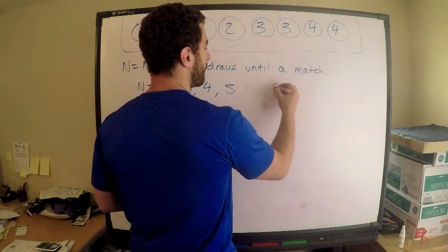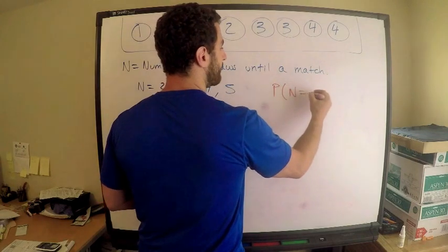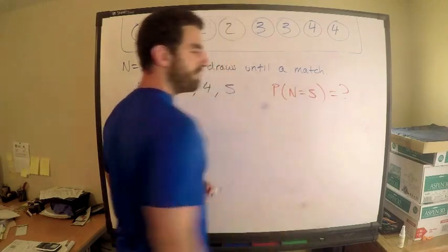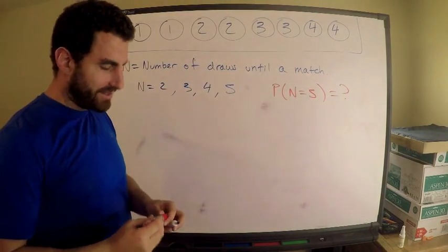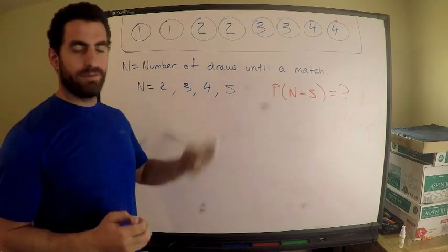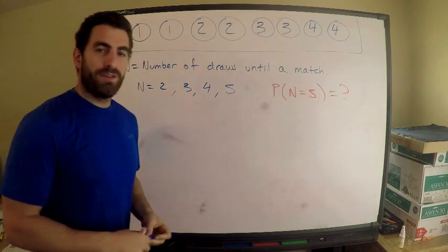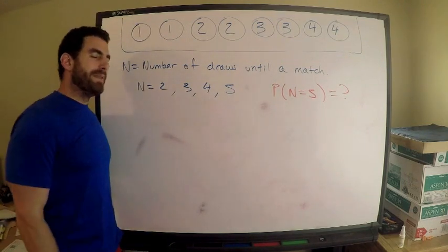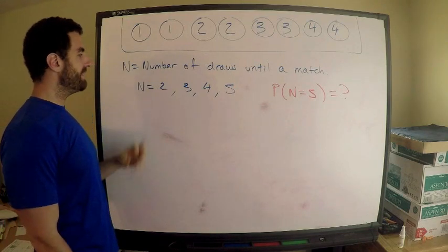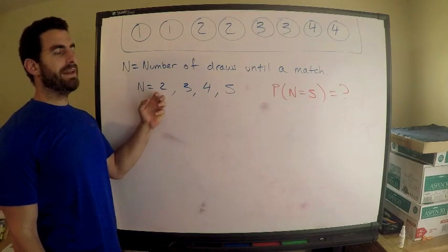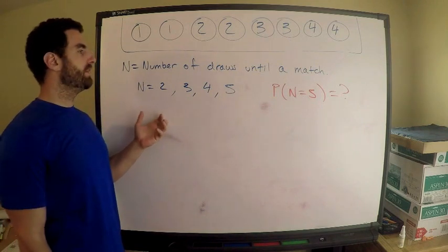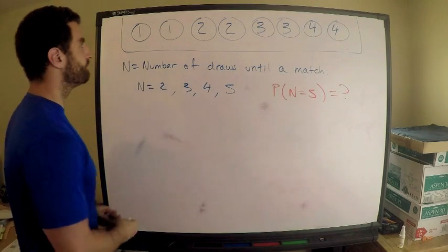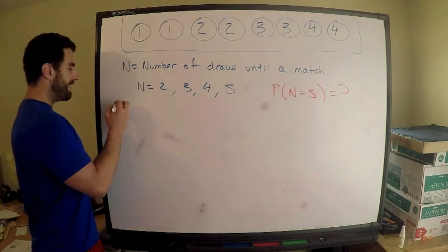We're asked for the probability of the maximum number of draws, so the question is asking for P(N = 5). I'm going to go through P(N=2), P(N=3), P(N=4), and P(N=5). You'll see these events are disjoint — you can't have N equal two and three simultaneously — so their probabilities should all add up to one.